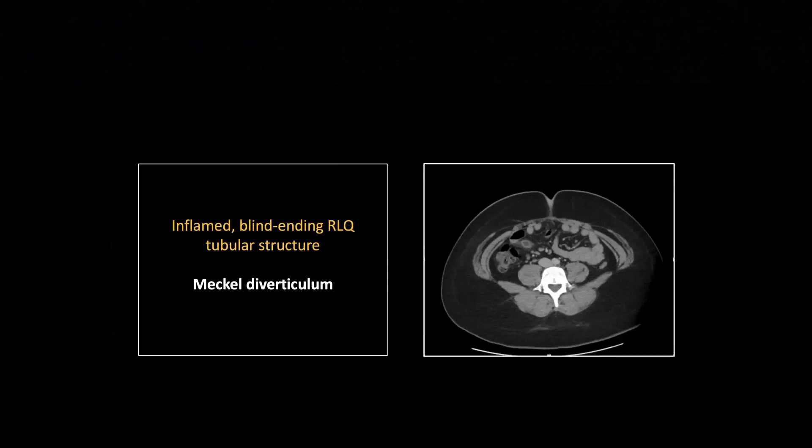I've got a couple of cases of Meckel's diverticulum and then some cases of appendicitis. So this is a Meckel's diverticulum — it's a blind-ending structure that's coming off the small bowel, the ileum, usually as much as two feet from the ileocecal valve. It is clearly originating from the small bowel rather than from the cecum, and that's how it can be distinguished from an appendix.